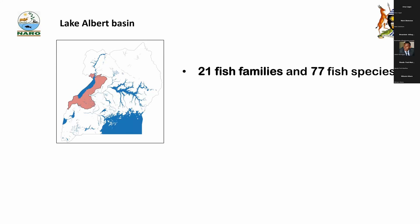Good afternoon. My name is Nicholas Mzaur, and I'm taking you through the Lake Albert system presentation on a fish atlas. The system shows that it has 21 fish families and 77 fish species.